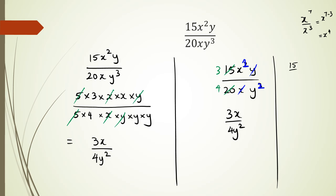Because you could actually write it as 15 over 20, x to the power of 2 minus 1, and y to the power of 1 minus 3. And of course, doing your 15 over 20, you get 3 and 4. So what you get is 3 over 4, x to the power of 1, and y to the power of negative 2.